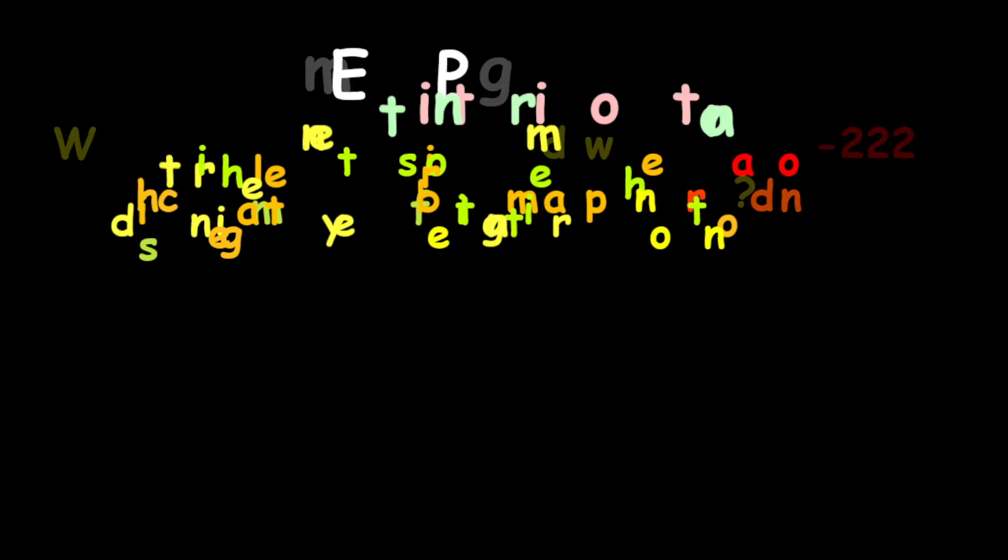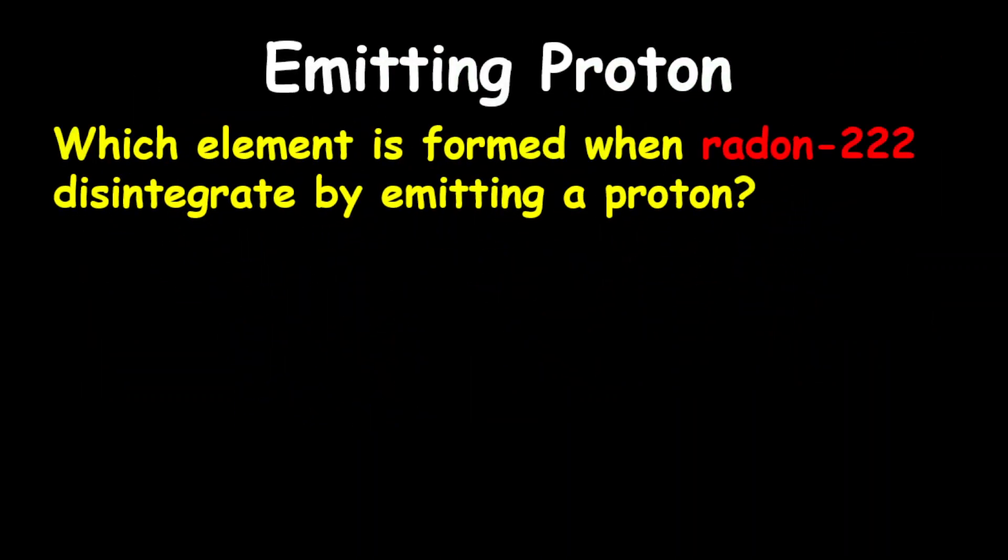For our first two examples, we are going to go through the emission of proton. The first question reads, which element is formed when radon-222 disintegrates by emitting a proton?